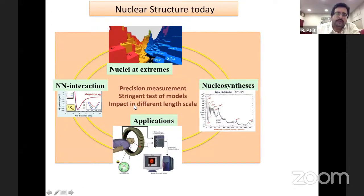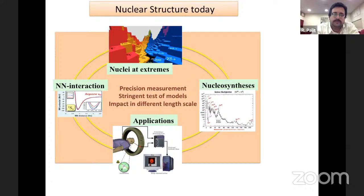The three main themes are: precision measurement of different nuclear properties in nuclear structure, which helps us do stringent tests of different nuclear structure models, and this has impact at different length scales. This is the main theme of nuclear structure today and it is a very broad subject.